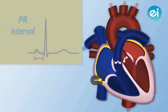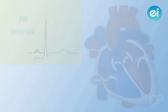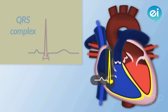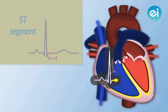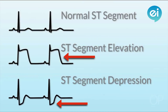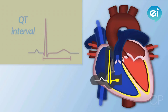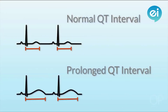The PR interval is the measure of time from the onset of atrial contraction to the onset of ventricular contraction. The QRS complex represents the complete depolarization of the ventricles. The ST segment represents the complete repolarization of the ventricles, and elevation or depression of this segment may indicate heart muscle ischemia. The QT interval represents the complete depolarization and repolarization of the ventricles, and a prolonged QT interval is a risk factor for ventricular arrhythmias and sudden death.